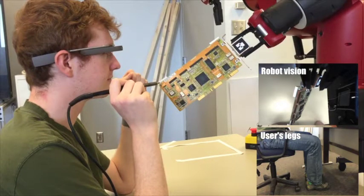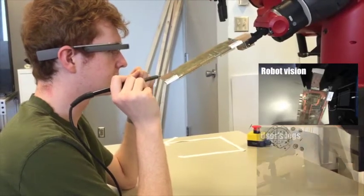In this implementation, a user can see the robot's perspective through Google Glass while also using their legs to control the robot's arms.